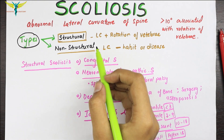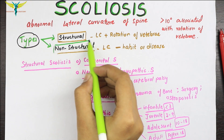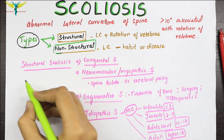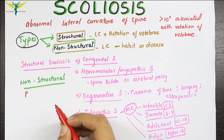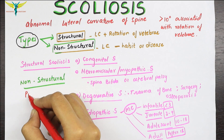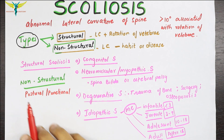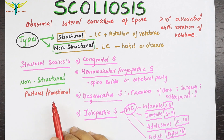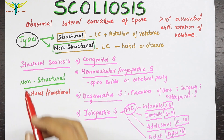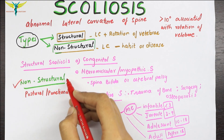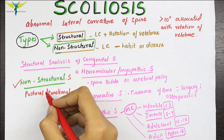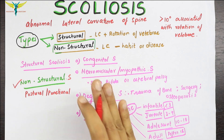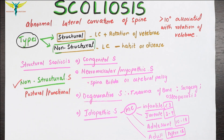The second main type of scoliosis is non-structural scoliosis, also called postural or functional scoliosis. Here, the lateral curvature of the spine is present but rotation of the vertebrae is not seen. This non-structural scoliosis is a reversible lateral curvature that disappears when the patient lies in the supine or prone position.